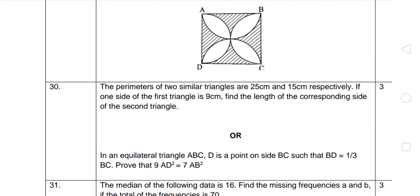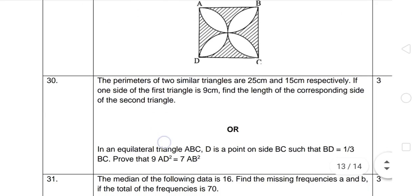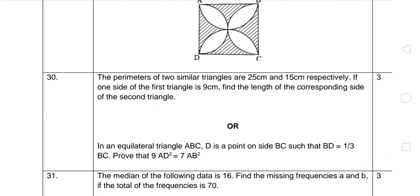Hello students, welcome to my YouTube channel. Question number 29: The perimeters of two similar triangles are 25 cm and 15 cm respectively. If one side of the first triangle is 9 cm, find the length of the corresponding side of the second triangle.